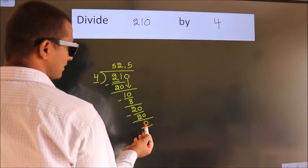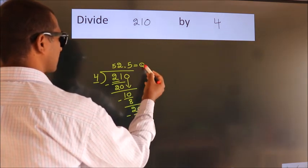We got remainder 0. So this is our quotient: 52.5.